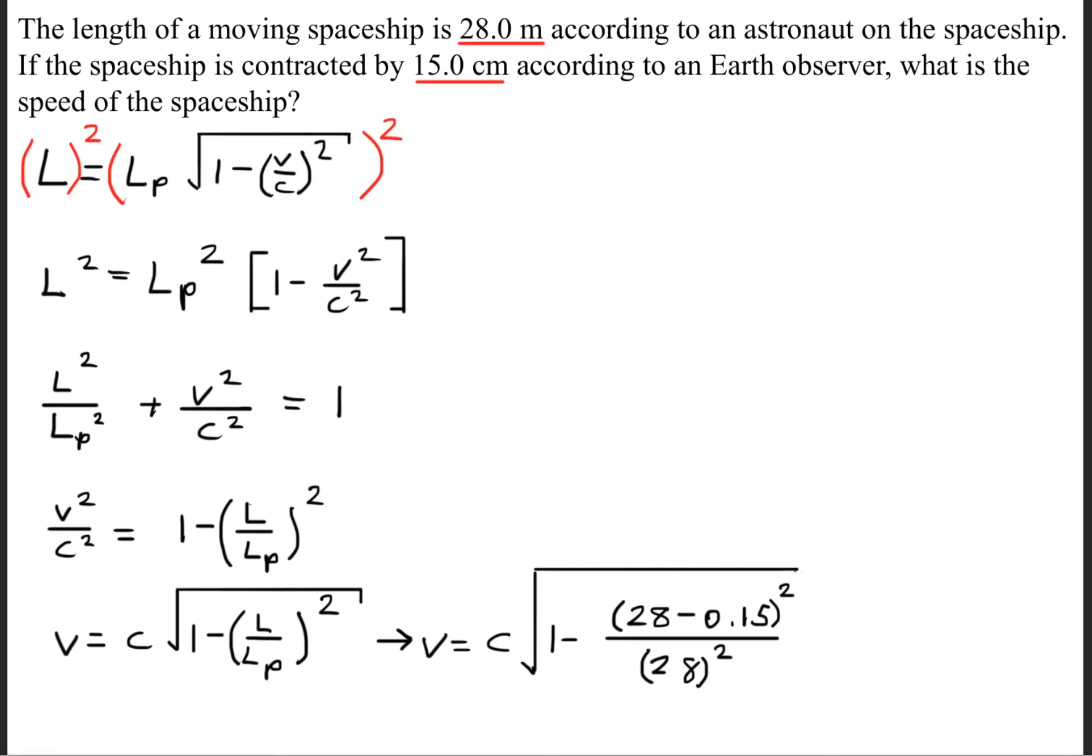The contracted length is not 15 centimeters. We need to subtract this from 28 meters because the problem states the spaceship contracted by 15 centimeters. So we need to find the contracted length.